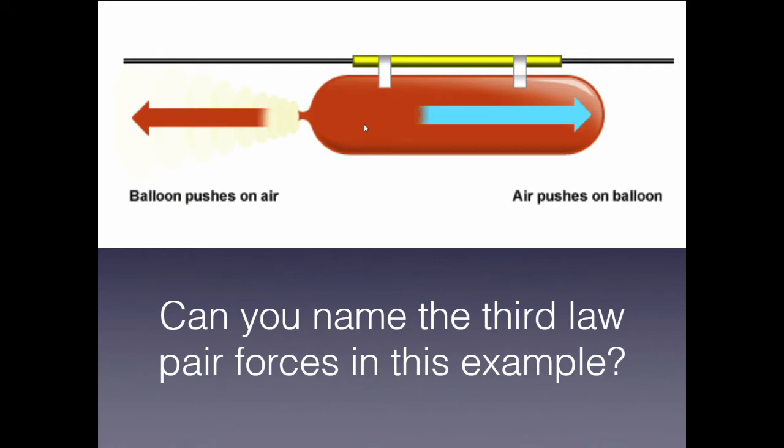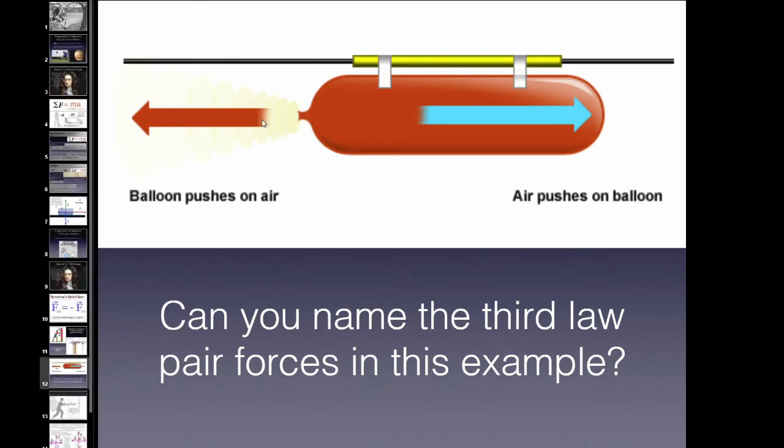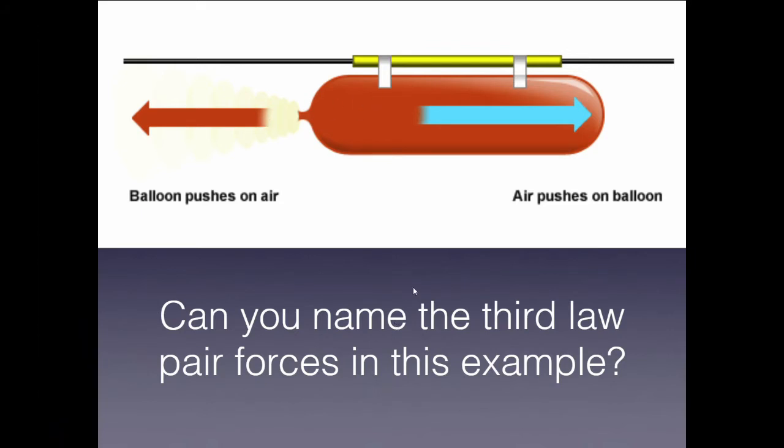Can you name the third law pair forces in this example? So this balloon has been blown up, it's put on this rack, and it's allowed to slide along the rack, and then the knot at the end is cut. So the air, pressure inside, which is high, escapes, and that ends up propelling the balloon forward. So what are the two forces? Well, there's a force by the balloon on the air. Now, that's often misunderstood, but that's true. The balloon has to be pushing on the air, a net outwards push. And the pressurized air inside the balloon, well, it's going to push the balloon forward. So this is the force of the air on the balloon.